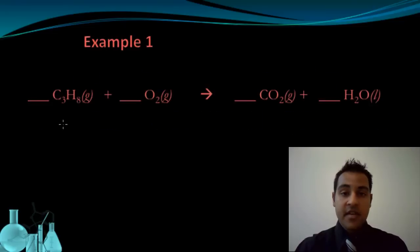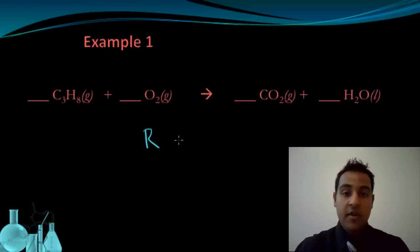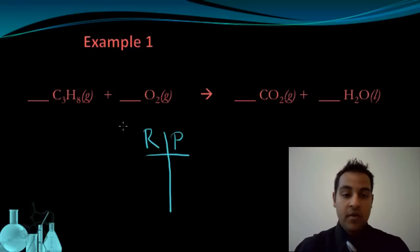In this first example, we have a chemical equation showing the combustion of propane. We have C3H8, that's propane gas, plus oxygen gas, which yields carbon dioxide and water. Your first step should always be to create a chart that keeps track of the number of atoms of each element on both sides of the reaction. In this particular reaction, we have the elements carbon, hydrogen, and oxygen.